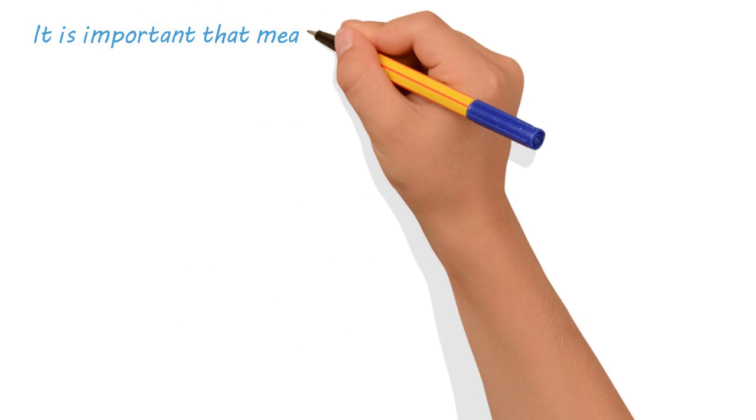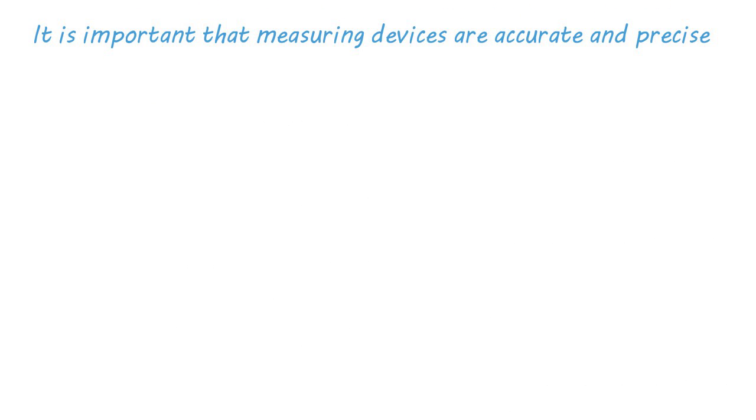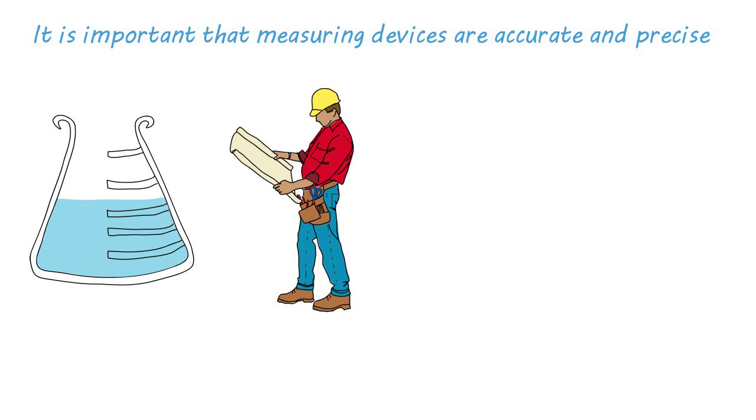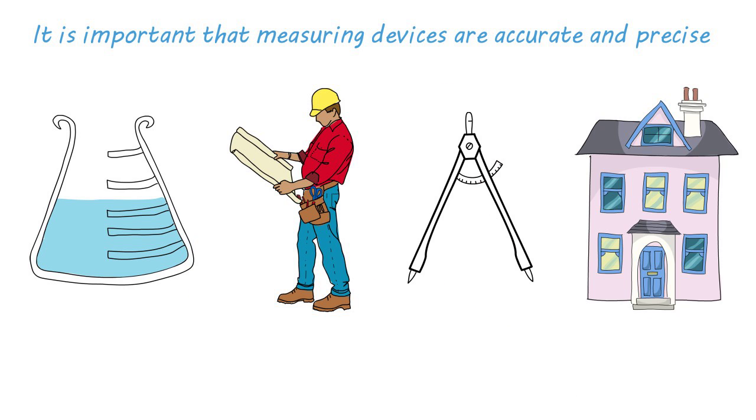It's important that measuring devices are both accurate and precise, whether it be in research, construction, engineering, or even in your home. If they're not, then results or measurements will be misleading at best and fatal at worst.